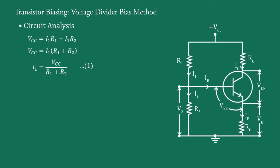This is the current through R2. So voltage across R2 is V2 equal to I1 into R2. Substituting the value of I1 from this equation, we have V2 equal to VCC R2 upon R1 plus R2, say equation 2.